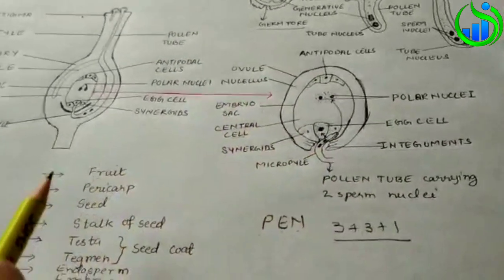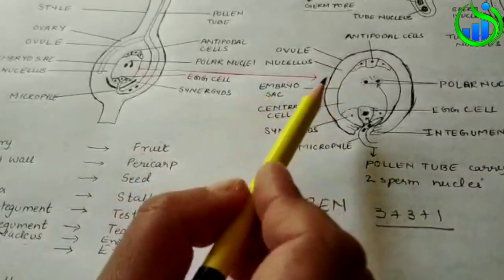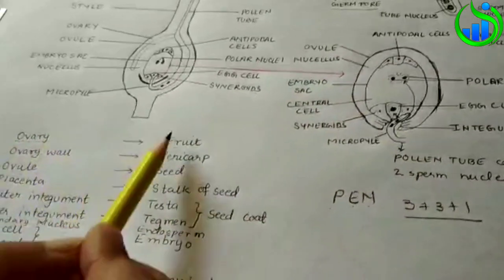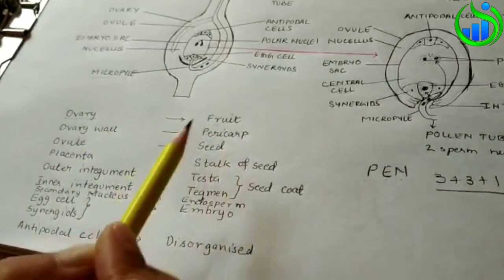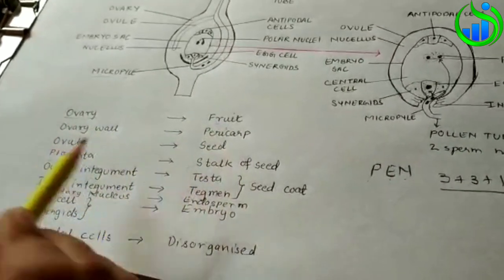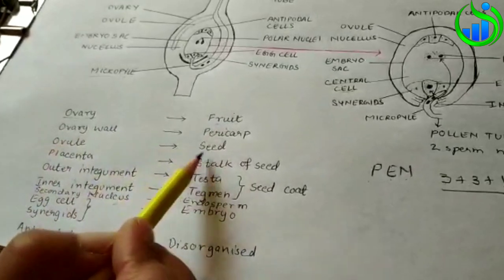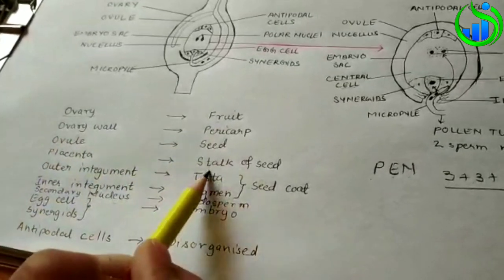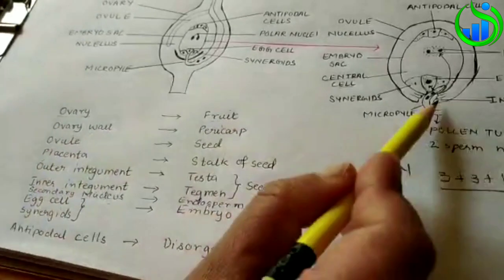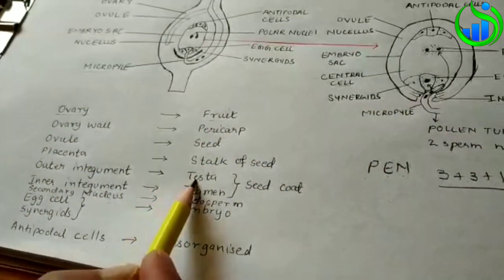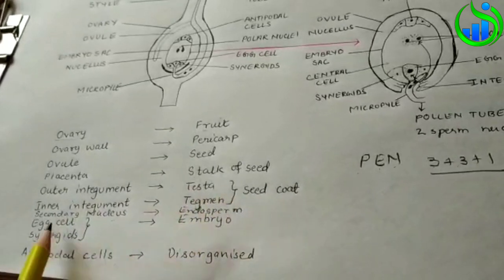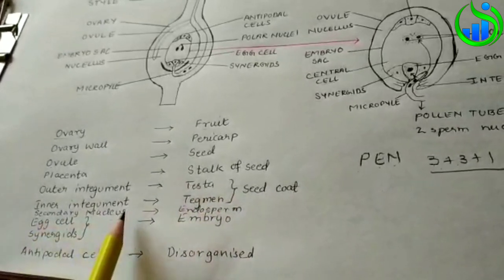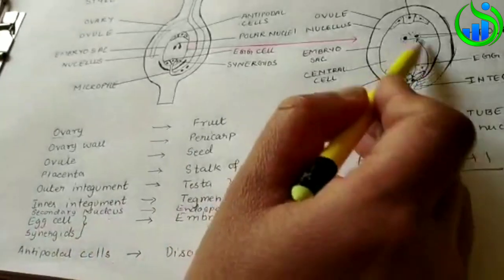We have ovary becomes fruit, ovary wall becomes pericarp. The ovule becomes seed, the placenta becomes stalk. The outer integument becomes testa, the inner integument becomes seed coat covering. The secondary nucleus becomes embryo through fusion.